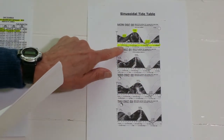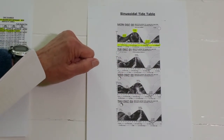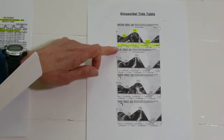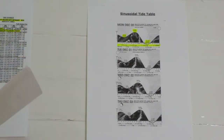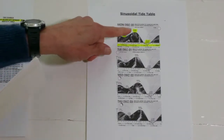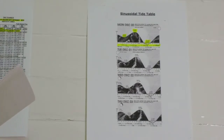This bottom line of data is for the Carquinez Strait and isn't relevant to swimming in and around Aquatic Cove. The black peaks and valleys are not the maximum current or slack times.